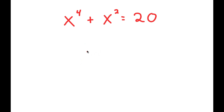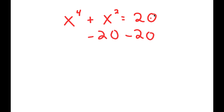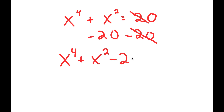So in this equation, I have x to the power of 4 plus x squared is equal to 20. To solve this, I'm going to start by subtracting 20 on both sides, so we can have all our terms on one side. So I get x to the power of 4 plus x squared minus 20 is equal to 0.